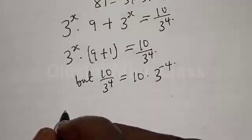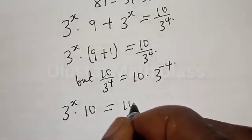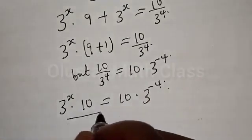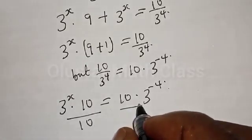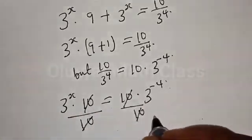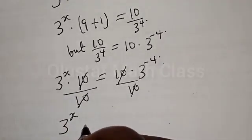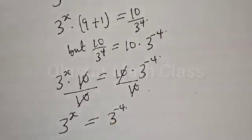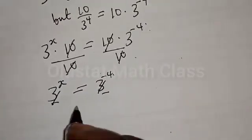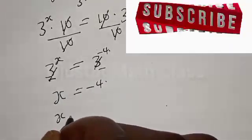Now divide both sides by 10. The 10s cancel, and our equation becomes 3 to the power x equal to 3 to the power minus 4. Since they have the same base, the bases cancel, then x equals minus 4. Our final answer is x equal to minus 4.